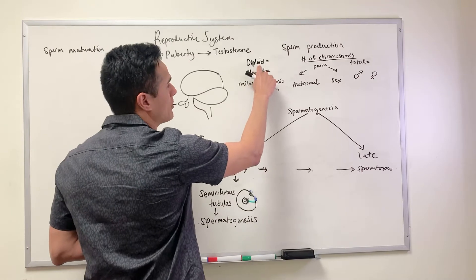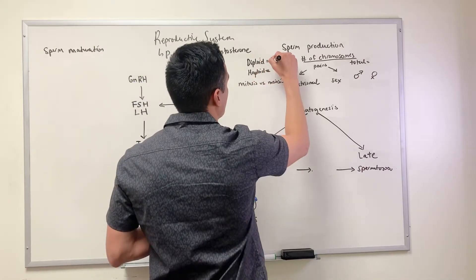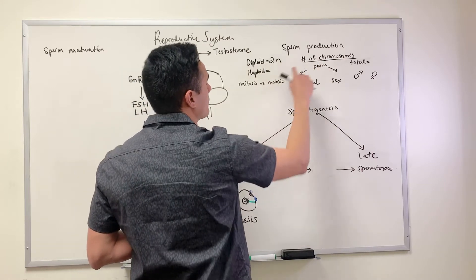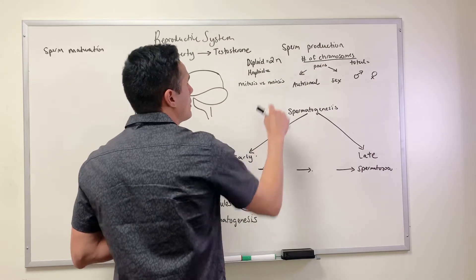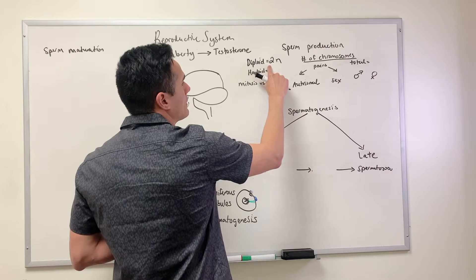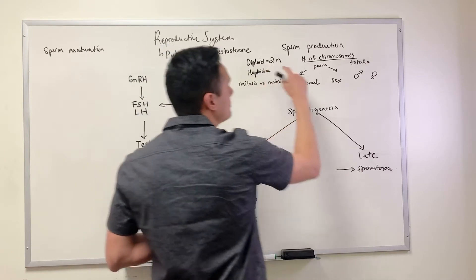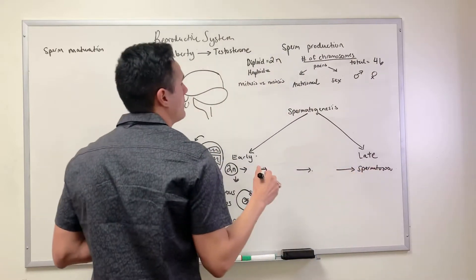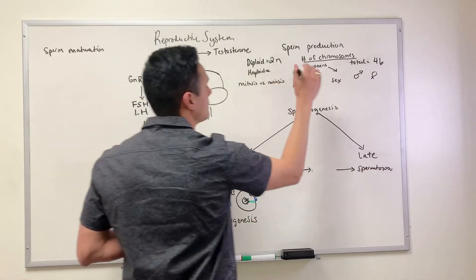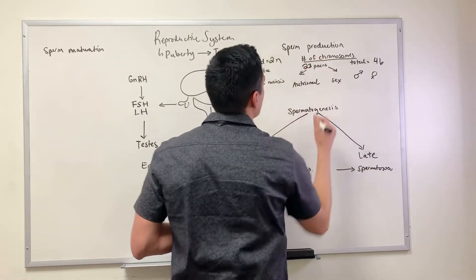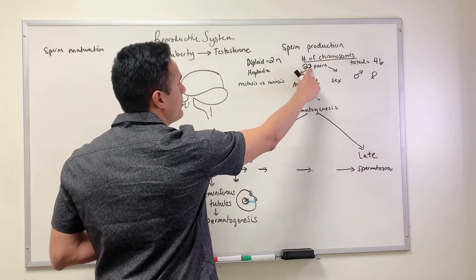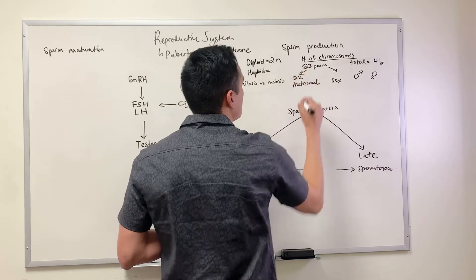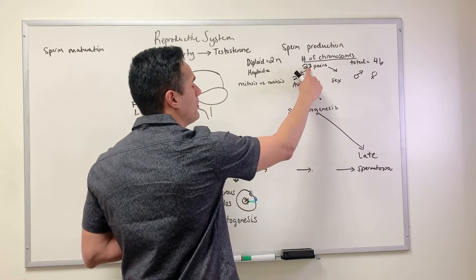When we say that a cell is diploid, we're going to use 2n. So n represents the number of chromosomes. A diploid cell has a total of 46 chromosomes because n is 23, so we have 23 pairs of chromosomes.